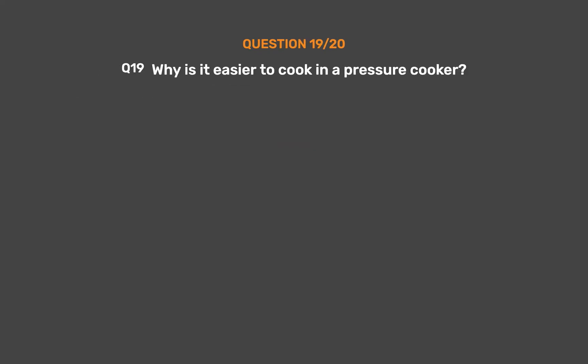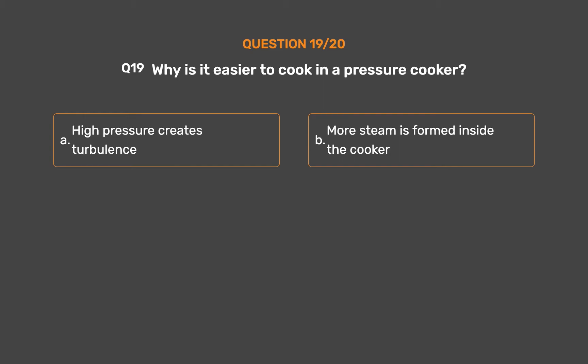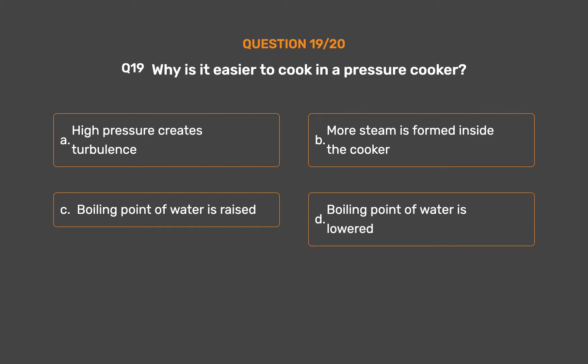Question number 19. Why is it easier to cook in a pressure cooker? Option A: High pressure creates turbulence. Option B: More steam is formed inside the cooker. Option C: Boiling point of water is raised. Option D: Boiling point of water is lowered. The correct answer is Option C, boiling point of water is raised.